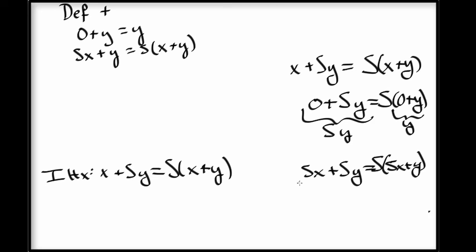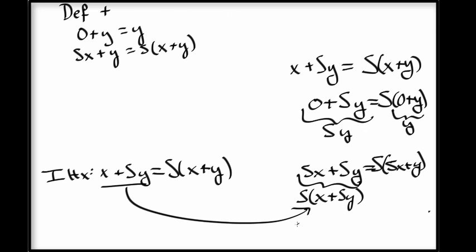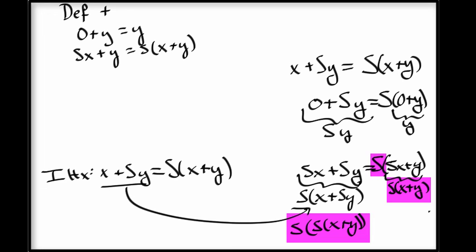Now let's look at the inductive case. We simplify the left hand side to be successor of x plus the successor of y. Now we can rewrite with the inductive hypothesis, and it becomes successor of successor of x plus y. This is almost the same as the right hand side, but not quite yet, because this has successor of x plus y while the right side has successor of x plus y. We simply simplify underneath the successor and get successor of x plus y. Now the left hand side and right hand side are the same. So we're done.